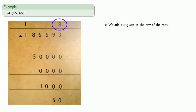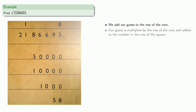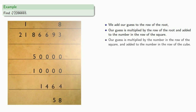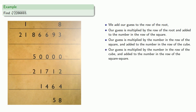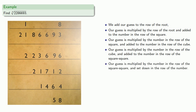So we add our guess to the row of the root. Our guess is multiplied by the row of the root and added to the number in the row of the square. Our guess is multiplied by the number in the row of the square and added to the row of the cube. Our guess is multiplied by the number in the row of the cube and added to the number in the row of the square square. Our guess is multiplied by the number in the row of the square square, and now we set it down in the row of the number and subtract.